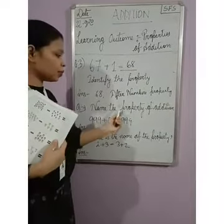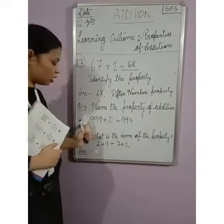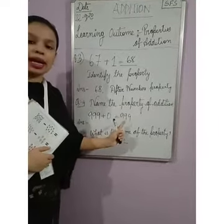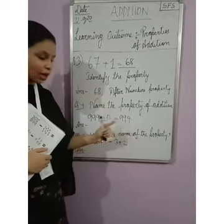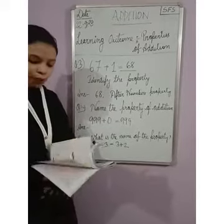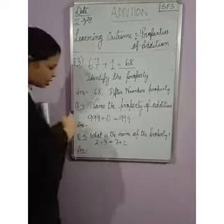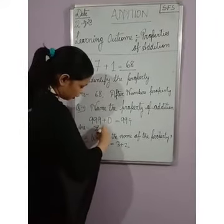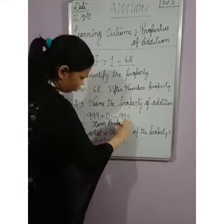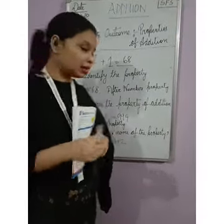The next question is: name the property of addition. It is a 3-digit number example: 999 plus 0 equals to 999. We are getting the same answer, and what we added was 0. So the property used here is the zero property.